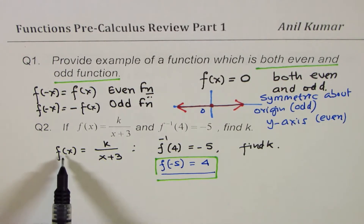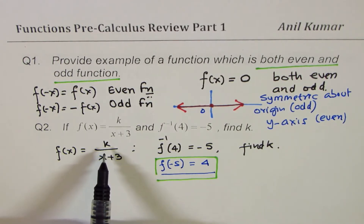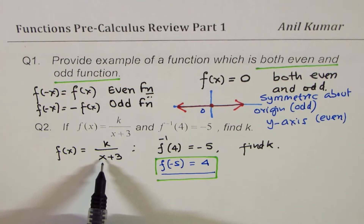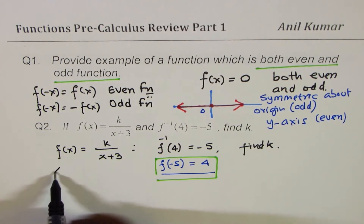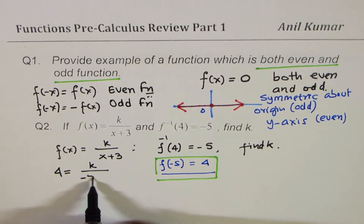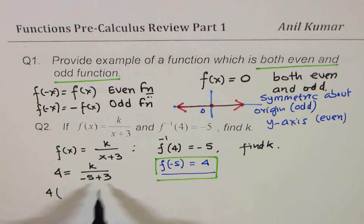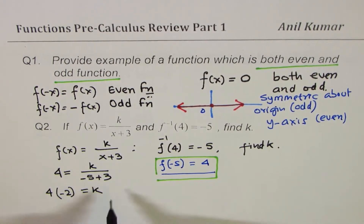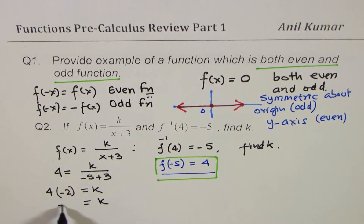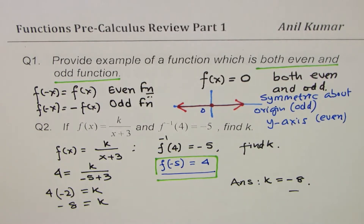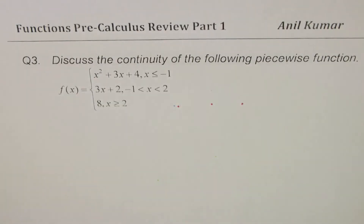Substitute x = -5 and f(x) = 4 to find k. So: 4 = k/(-5+3) = k/(-2). Therefore 4 × (-2) = k, and clearly k = -8. So our answer is k = -8.